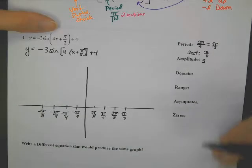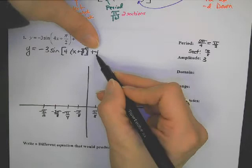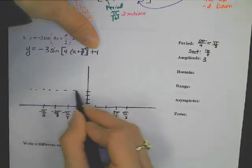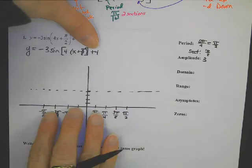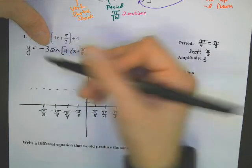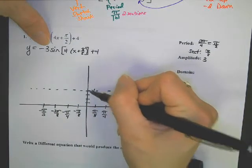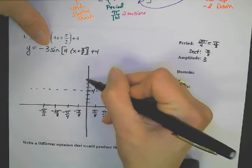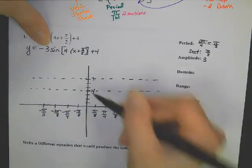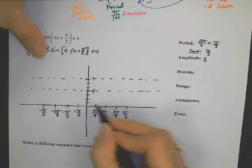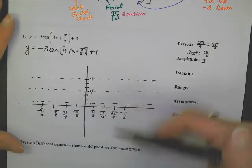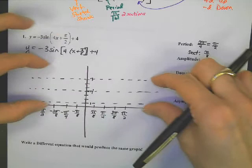Next, consider the shift up and down — we shift up four, so the middle of the sine is right here; the middle used to be on the X-axis, now it's there. After shifting, consider the amplitude. Since the amplitude is three, it can go from four up an additional three — up to seven — and from the middle it can go down three, as low as one. We've got our amplitude and shifting, so the sine graph is going to be in here.